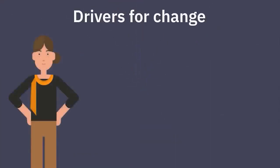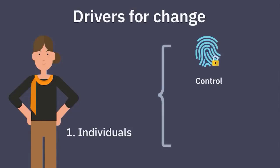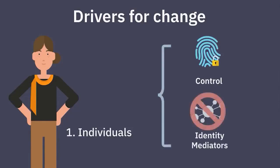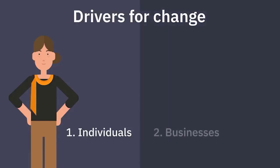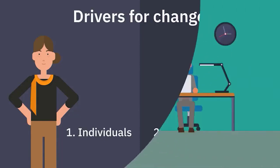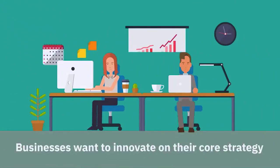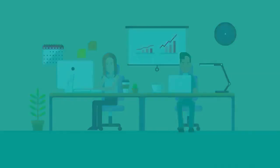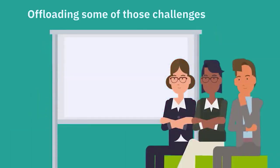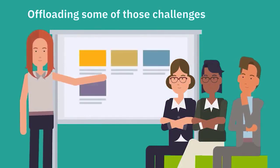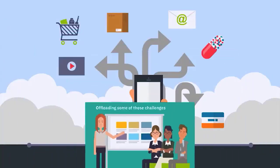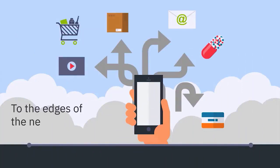So what are the two major drivers for change? First, we all want control over our identity and who we share it with through secure relationships, removing any identity mediators. Second, businesses want to optimize process workflows and decrease costs while remaining relevant in a digital economy. These same businesses also want to innovate on their core strategy instead of having to invest in an identity strategy. Evolving identity models can offload some of those challenges, which can then be reinvested in building core business value for clients.